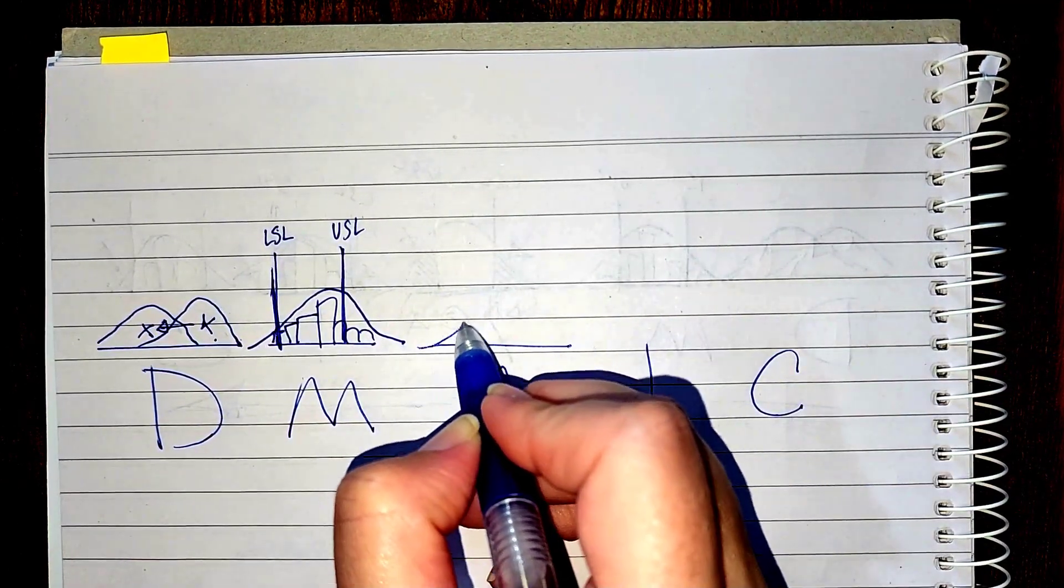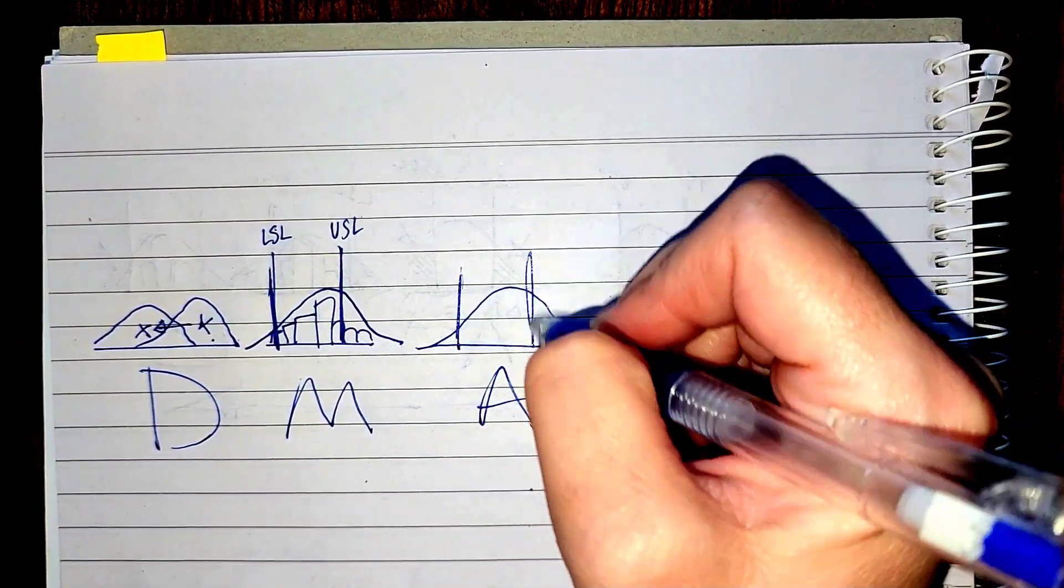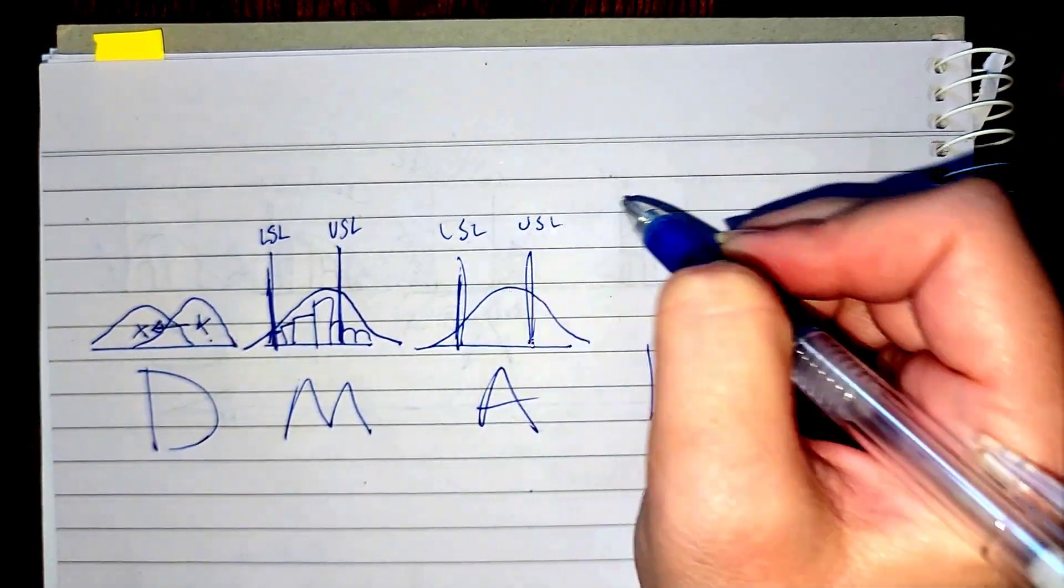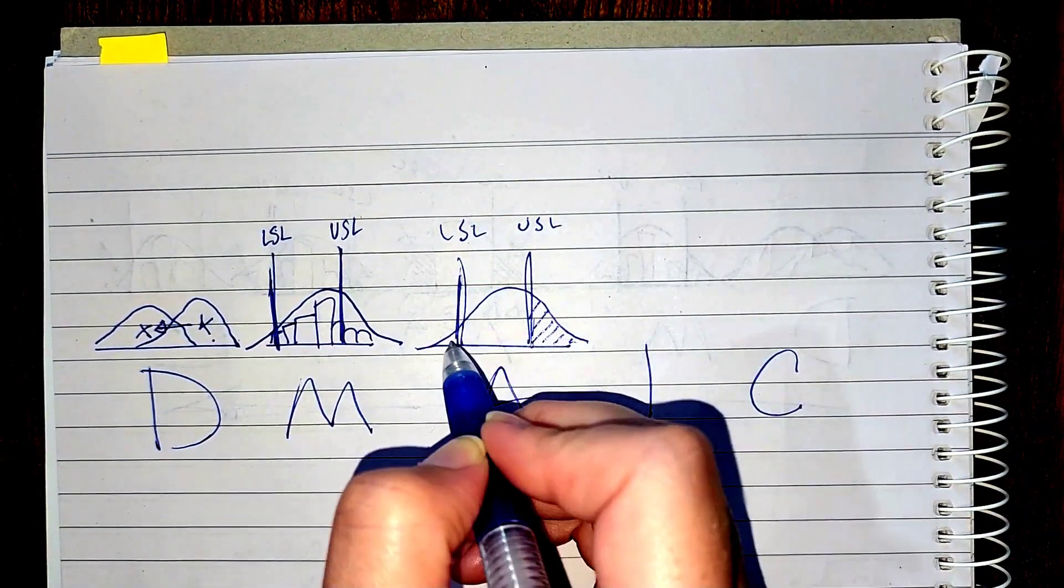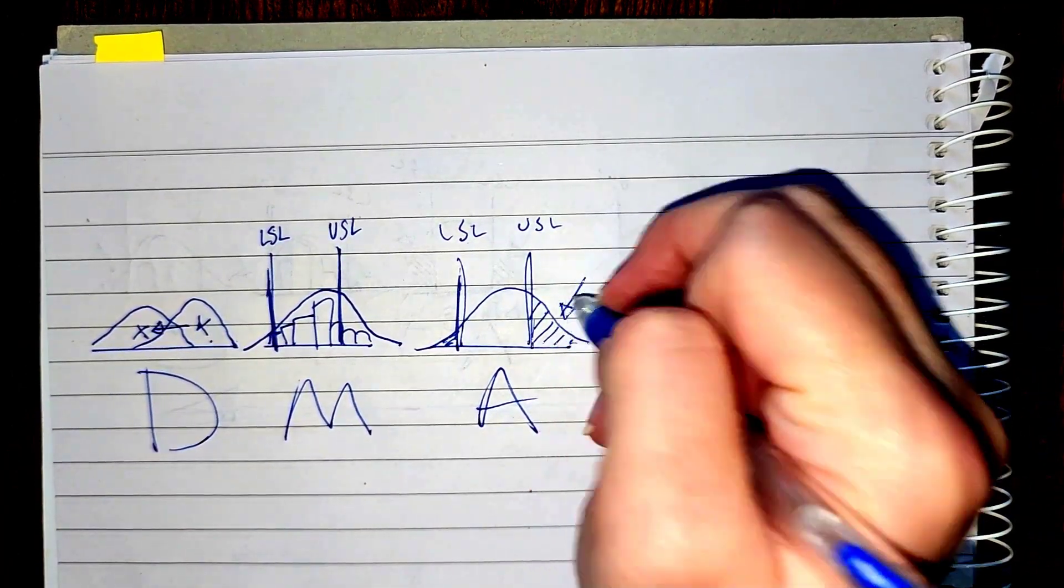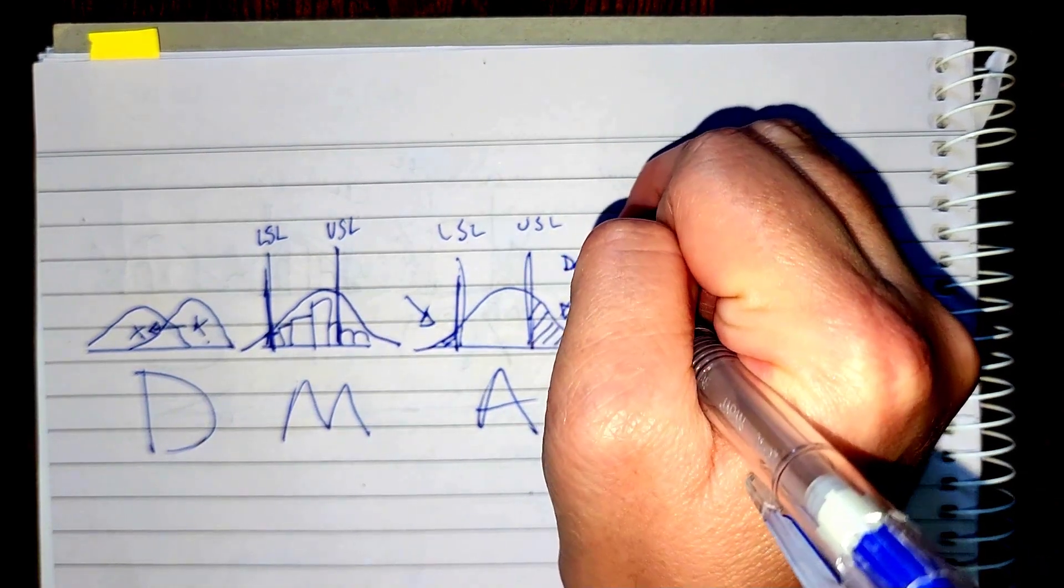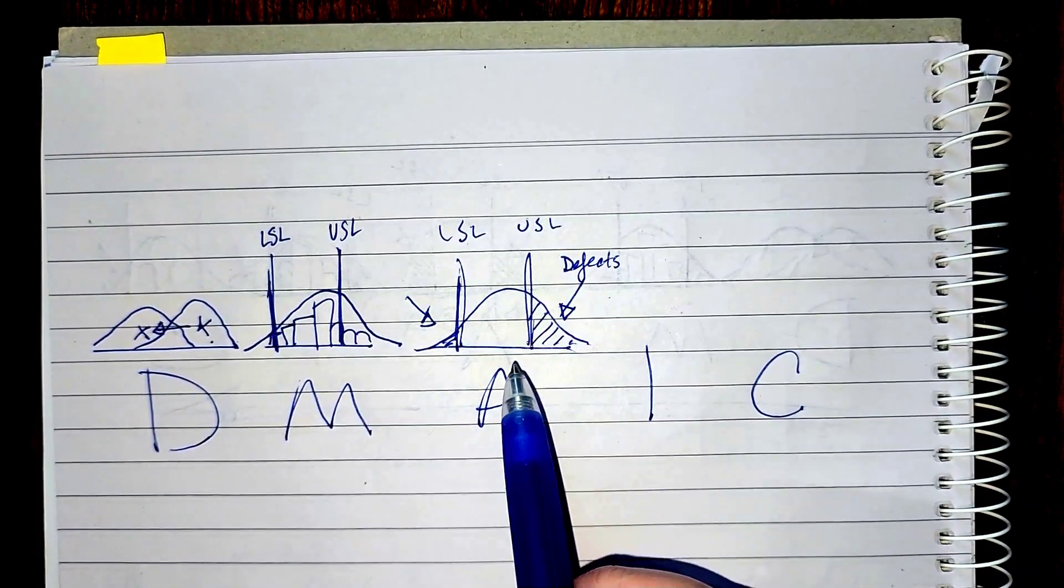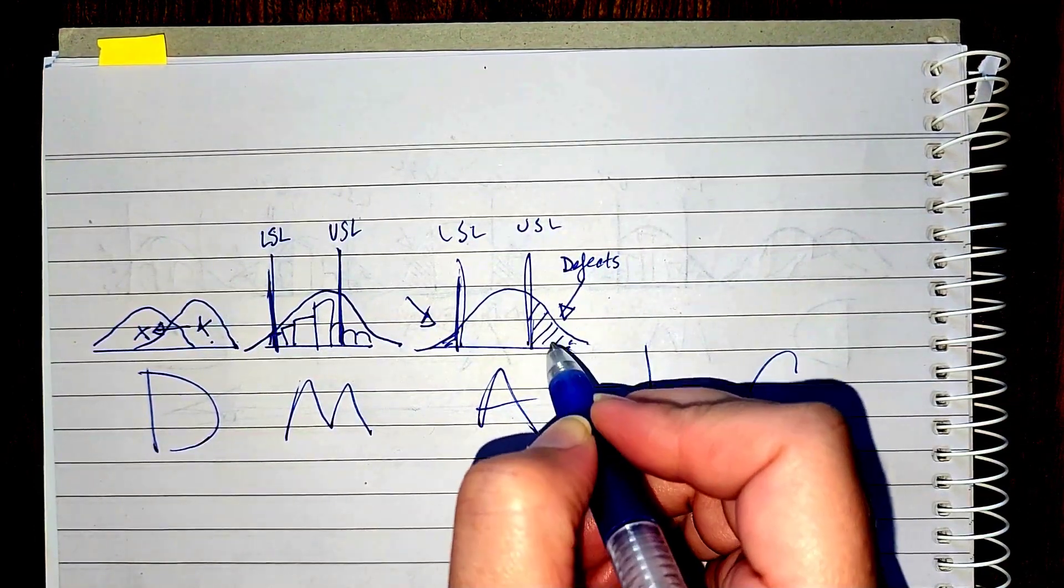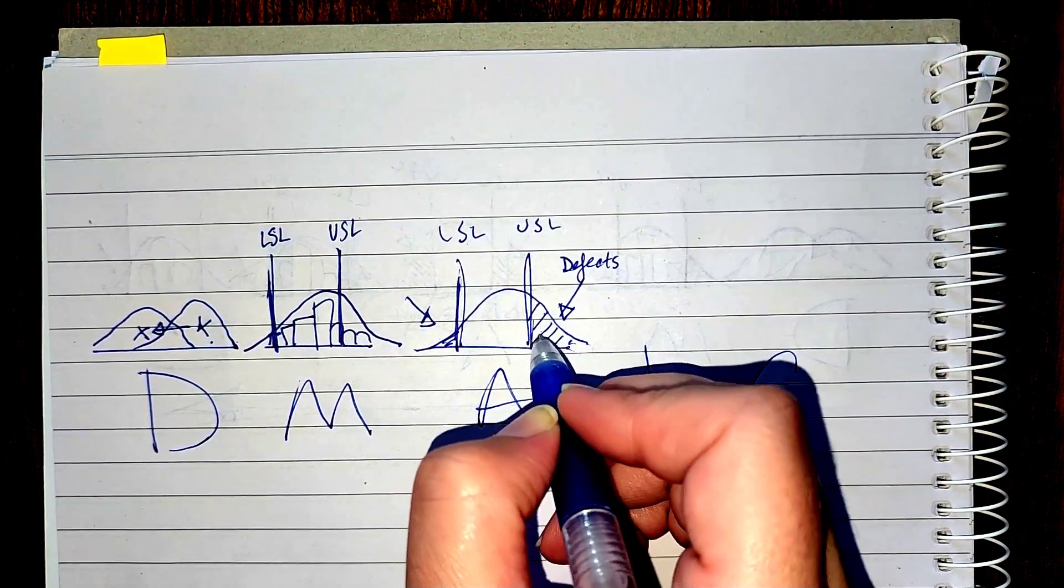Now in our analyze phase we're going to look at that current process, we're going to look at those goal posts, and we're going to say why are these defects happening. The great thing about putting these goal posts on, whether you're in the service industry or manufacturing industry, is now you can see your defects. Now you can see what is not working in your process and you can do an analysis to identify what are the root causes for why these are happening.